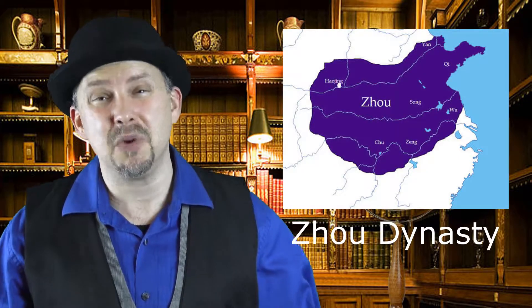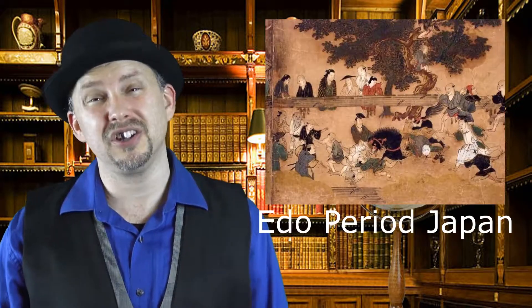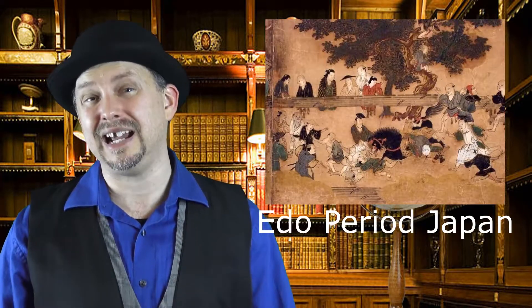Feudalism wasn't exclusive to Europe. It could also be found in China between 1046 and 256 BC and in Japan between 1603 and 1868. The main problems that arose with feudalism is that fiefdoms were often hereditary, causing a permanent class divide between those that had land and those that rented it. Over time, it also became difficult to keep track of who owned what land, weakening the whole system.